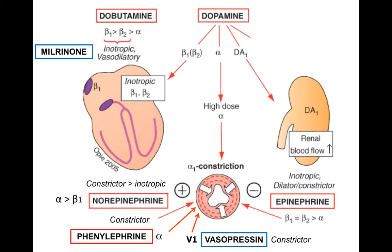If you think about where the different receptors are and which drugs activate which receptor, this is a broad overview and we'll delve into each agent individually. Agents that act primarily as inotropes — increasing contractility and heart rate — include dobutamine, which acts mostly through beta-1 receptors and also has vasodilatory actions due to its beta-2 effects. Milrinone is another vasodilator with the same net effects as inotropy and vasodilation, but through a different mechanism of action.